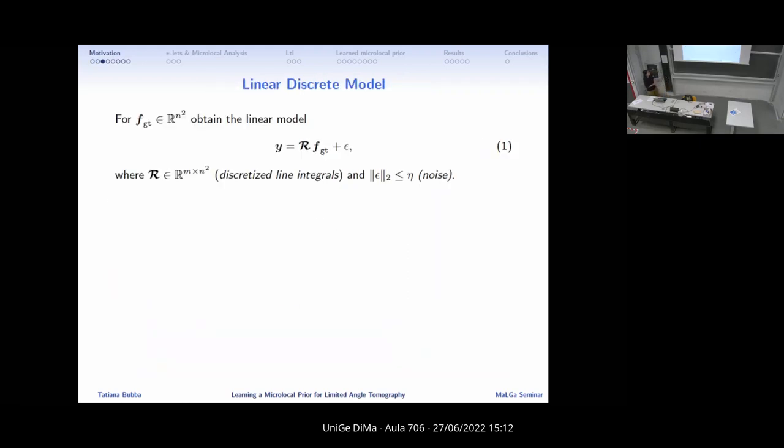You can discretize this problem. This becomes a linear problem, where your data, the Y, you can interpret as a vector, then your linear operator can also be seen as a matrix. You imagine that your data is stuck in a vector, and then you have some noise on it. There are many different ways to build R, and you have noise, which usually is Poissonian in the modeling that we do.